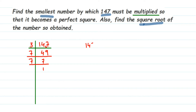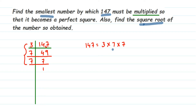So 147 can be written as 3 × 7 × 7. Now, if a number is a perfect square, its prime factors will always be in pairs. You can see that here they are not all in pairs — 147 is not a perfect square. We have one pair of 7s, but 3 is a single. If there were another 3, it would form a pair and the number would become a perfect square.